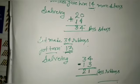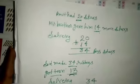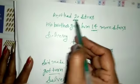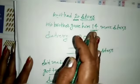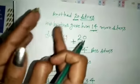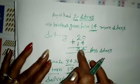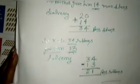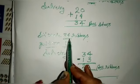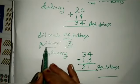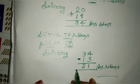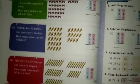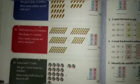यह concept clear हुआ? जब Amit को 14 stars और मिले, तो plus किया। यहाँ Sid के 13 ribbon फट गए और उसने उनको अलग कर दिया, तो minus किया। Okay students, this sum do yourself — this is your homework. Bye bye students, have a nice day!